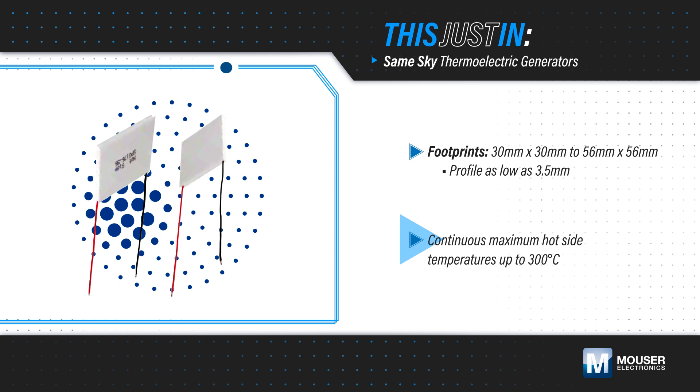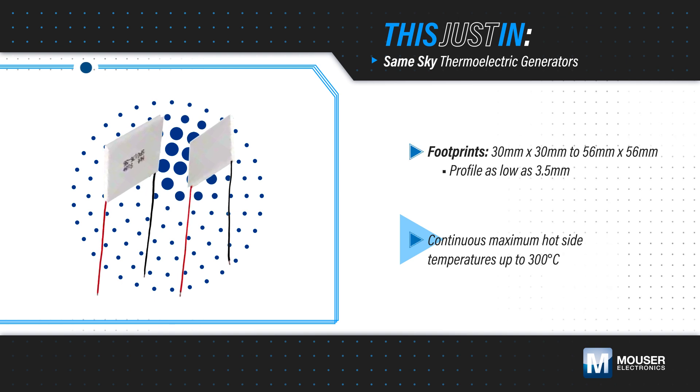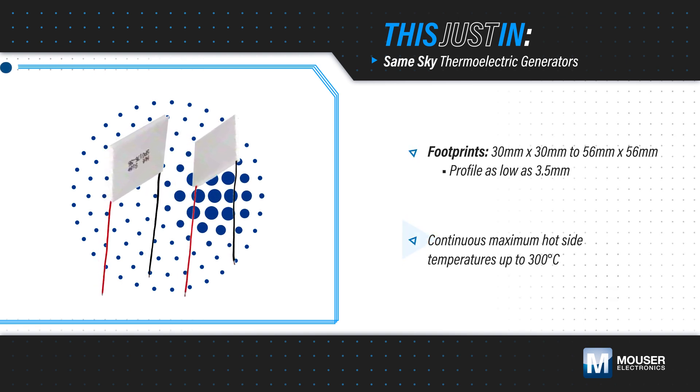They feature a silicone sealing, can sustain a continuous hot-side temperature up to 300 degrees Celsius, and are available with optional graphite pads to aid in thermal transfer. 150-millimeter wire leads simplify installation.